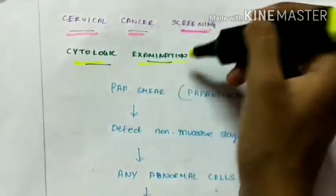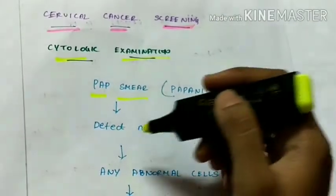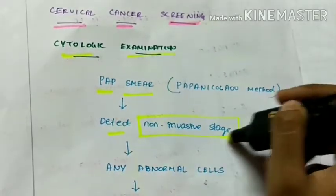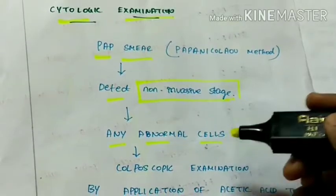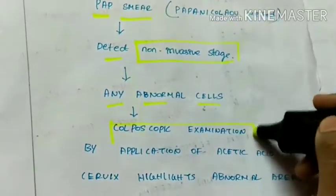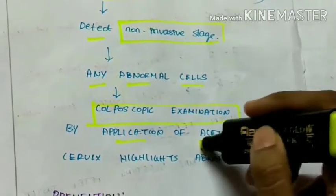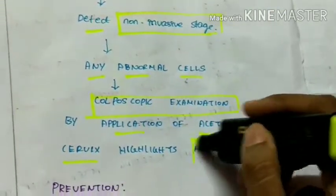Firstly, cytologic examination is performed using pap smear and this detects the non-invasive stage and any abnormal cells are detected using colposcopic examination by application of acetic acid to the cervix which highlights the abnormal areas.